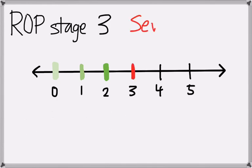Stage 3 is severely abnormal blood vessel growth. The doctors will try to treat ROP before stage 4 develops.